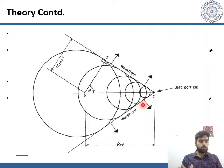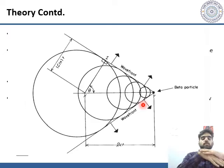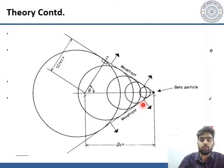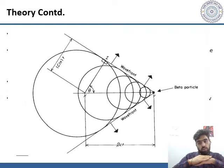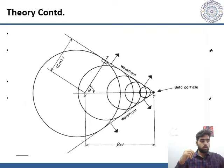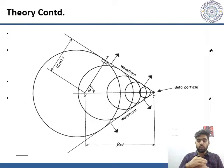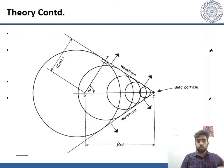This is a Huygens construction of wavefronts. The angle theta depends on beta and n. When the particle is moving very close to the speed of light, the angle is very acute. But when the particle is moving at a moderate speed, the angle is a little larger — more obtuse. You can see the wavefronts being created as the particle moves through the medium.